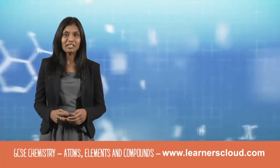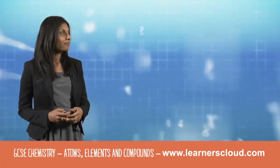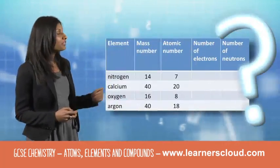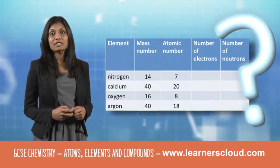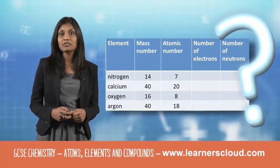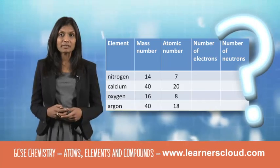So let's see whether you've got that. Here are some mass numbers and atomic numbers for different elements. P for proton, P for positive.